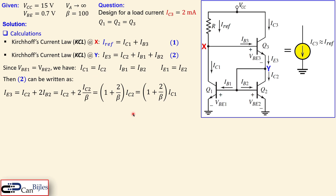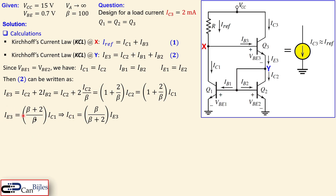We combine this into a single fraction: IE3 = ((β + 2)/β)·IC2. Flipping the equation lets us express IC1 in terms of IE3 — specifically IC1 = (β/(β + 2))·IE3. This is equation number three. We do this because we want to replace IC1 in equation number one to ultimately express IC3 in terms of I_ref.